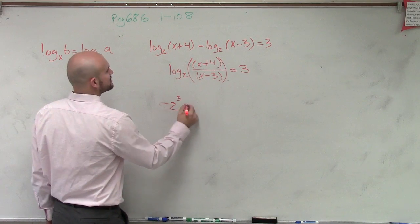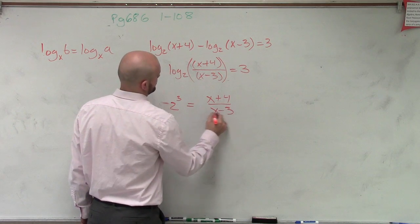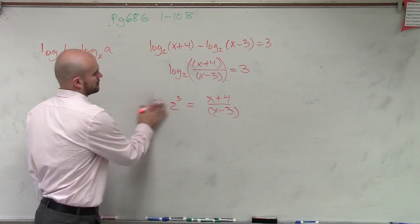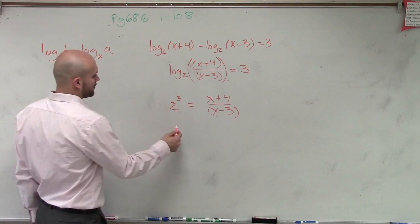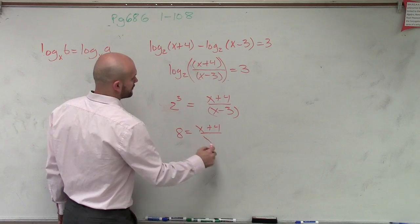So 2 cubed equals x plus 4 over x minus 3. So where'd you get the cube from? Oh, yeah. Right. Okay. So therefore, that's 8 equals x plus 4 over x minus 3.